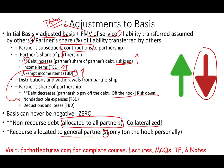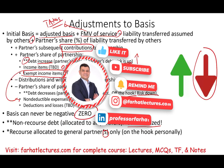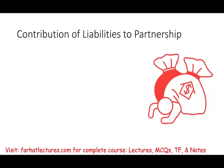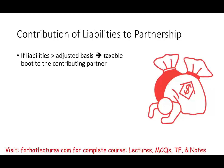Bear in mind: basis can never be negative. Your basis can go down to zero but not below. This is important because sometimes you can contribute liabilities in excess of your basis. What happens when contributions of liabilities to a partnership exceed the basis? For example, if you contributed $100,000 of liabilities and the adjusted basis of the asset is $75,000, you have excess liabilities of $25,000. That excess is taxable to you.